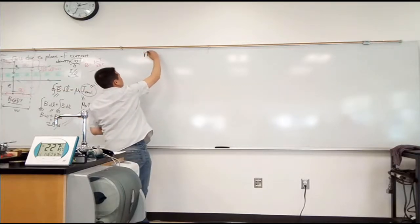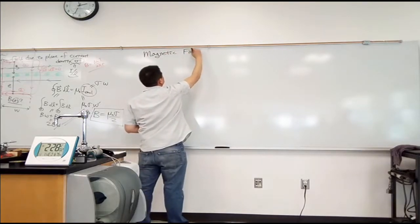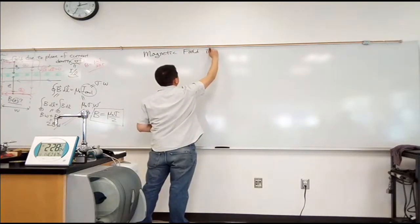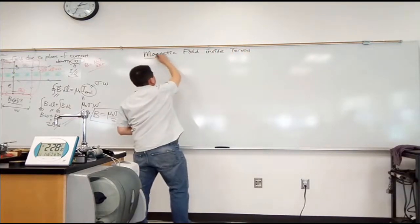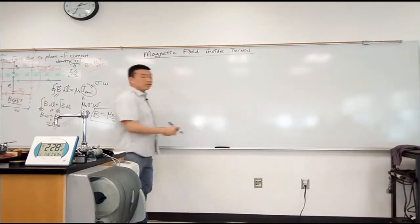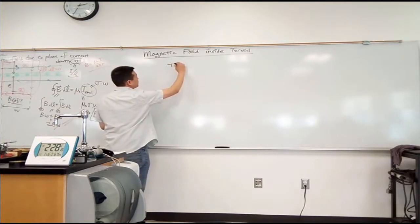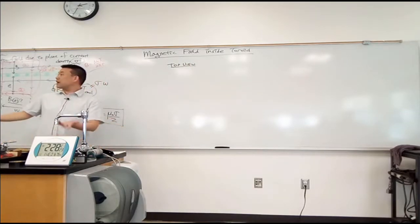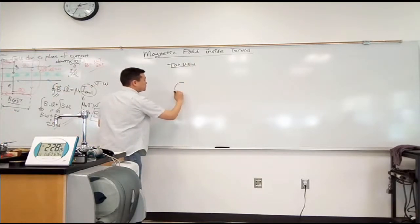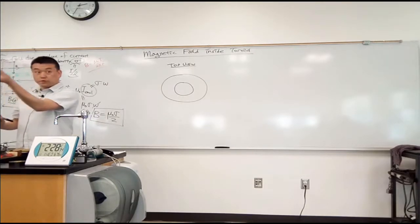So, we are looking at magnetic field inside a toroid. And let me actually draw a top view. I think that's actually easier to illustrate what kind of path we are going to be dealing with. So, let me draw the toroid in a top view. It looks like concentric circles. The inner circle and the outer circle, right? So, this is what I want you to imagine, top view of a toroid.